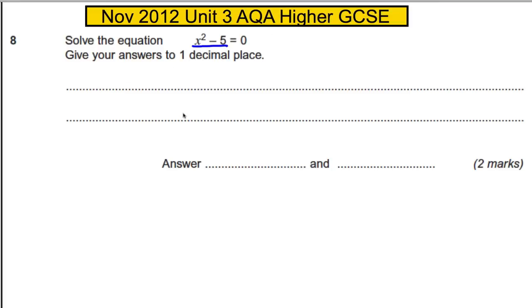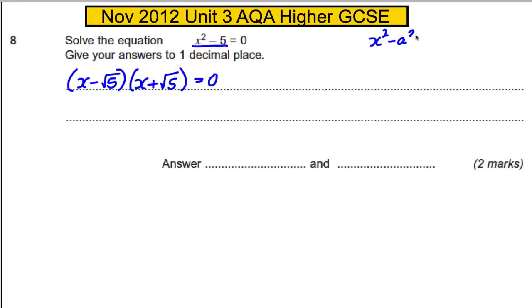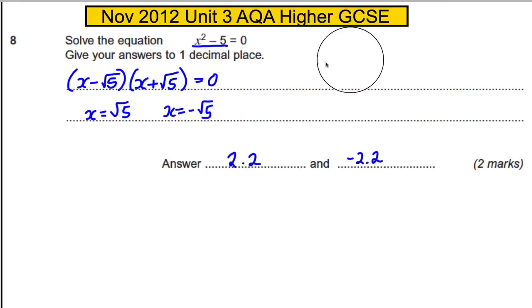The easiest method is to recognize this is a difference of two squares. It factorizes to (x − √5)(x + √5) = 0, because it is of the form x² − a². Therefore x = √5 or x = −√5. Typing √5 into the calculator gives 2.2 to one decimal place, so the answers are 2.2 and −2.2.